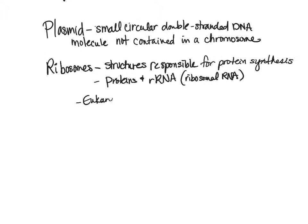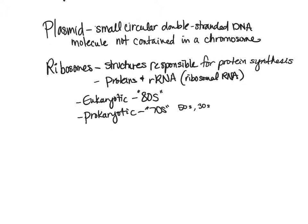Eukaryotic organisms have 80S cytoplasmic ribosomes, where 'S' refers to the Svedberg unit — a measurement related to weight when centrifuging. Prokaryotic ribosomes are 70S. They still have two subunits: a 50S subunit and a 30S subunit. Although 50 plus 30 does not equal 70, that's because of the way the components centrifuge out.